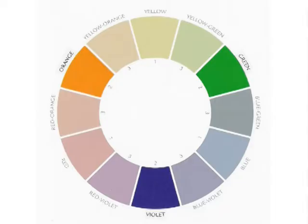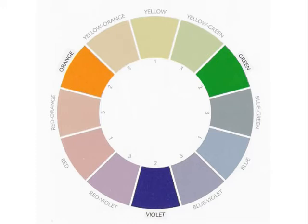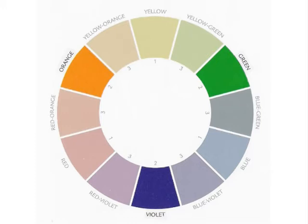When you mix any two of the primary hues, you produce a secondary color. Mixing red and blue yields violet, red and yellow yields orange, and blue and yellow yields green. On the color wheel, the secondary colors are represented by the number 2.